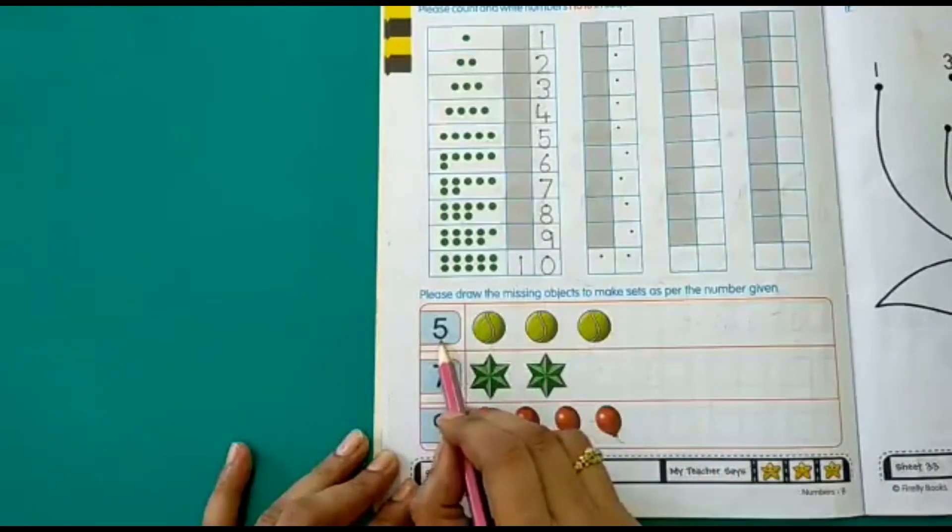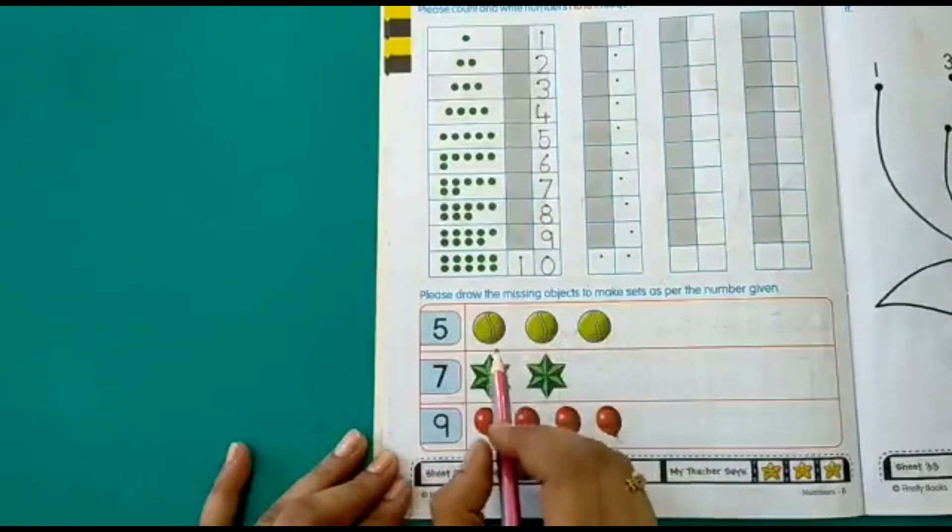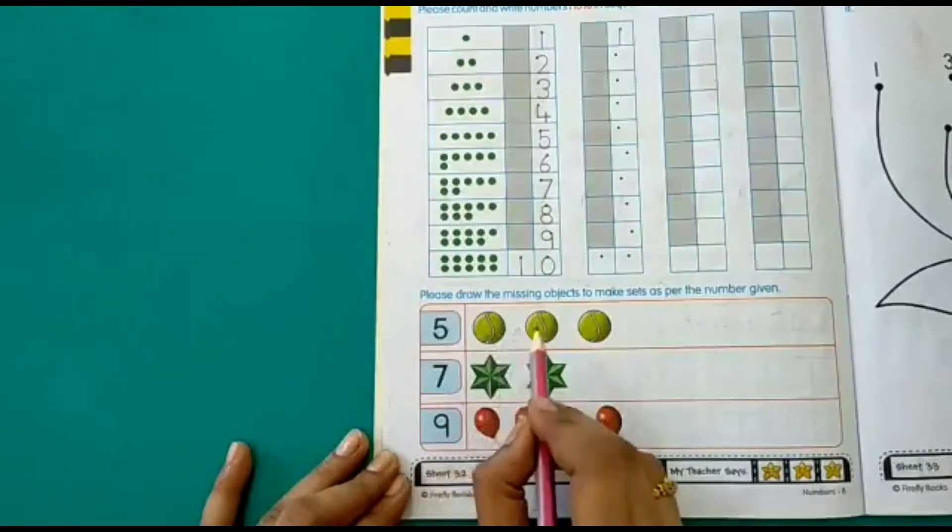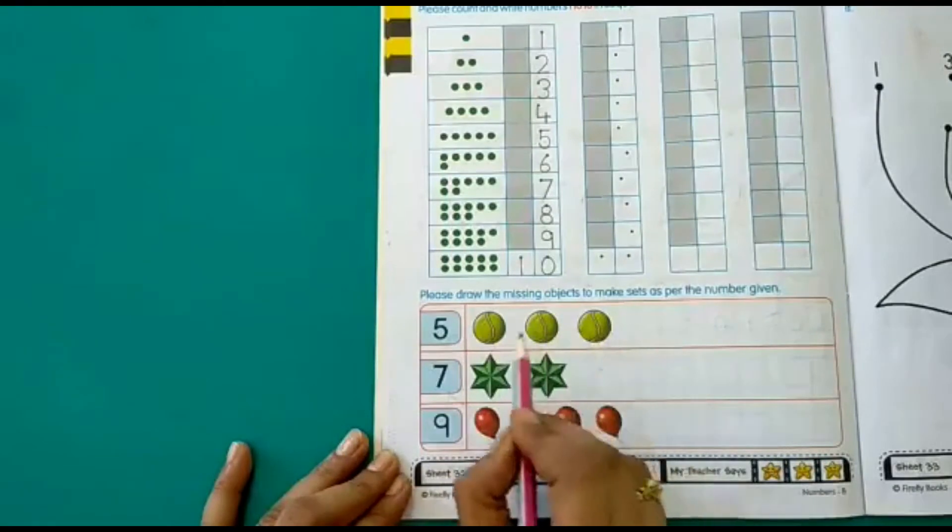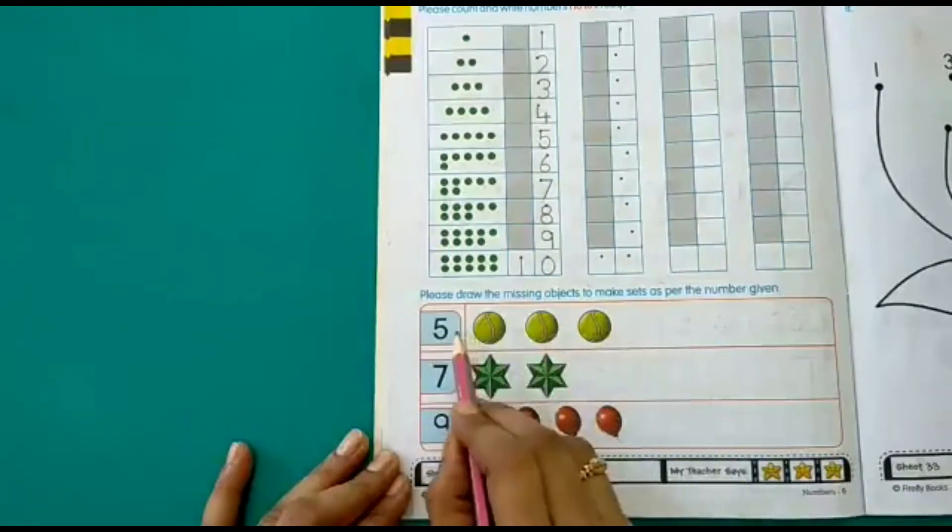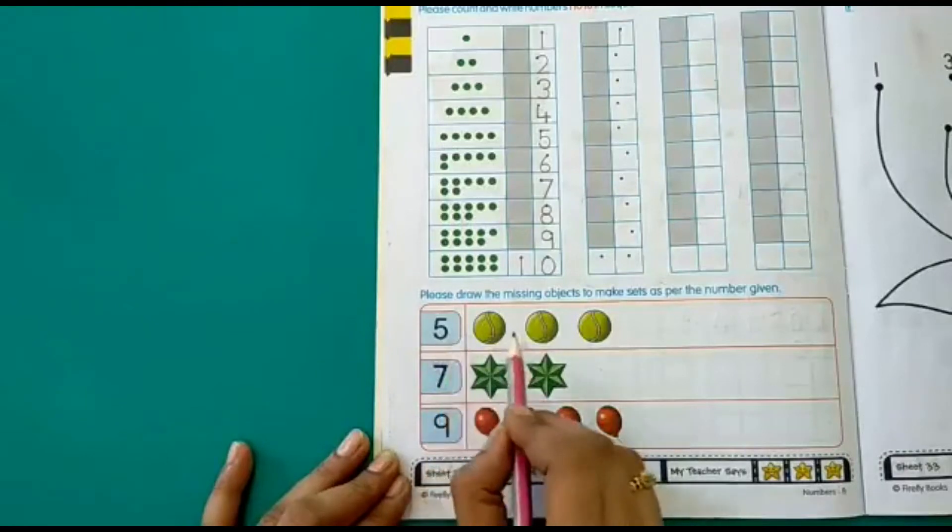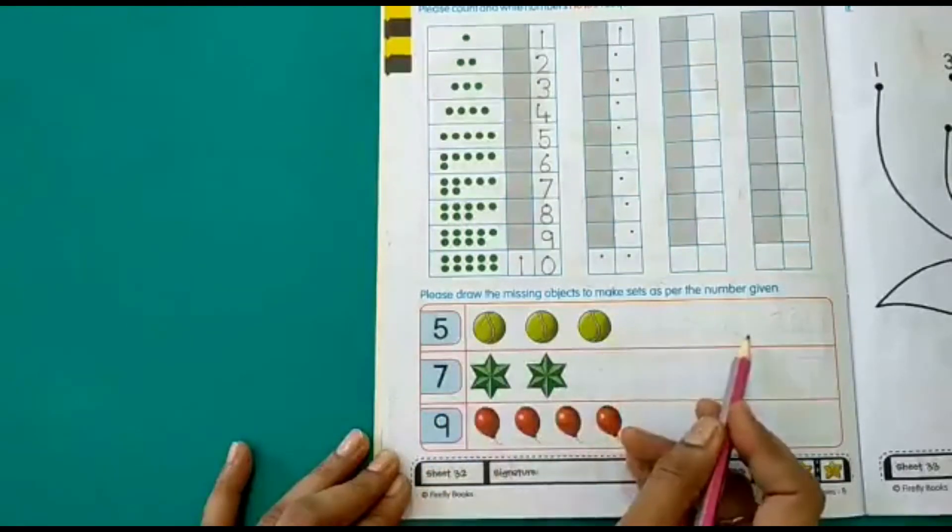So here we have number 5. Let's count how many balls we have here. 1, 2, 3. We have only 3 balls here. And the number written here is 5. So we have to draw here 5 balls.